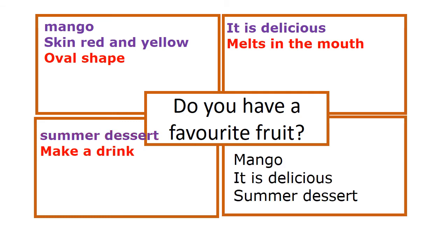As we said in the previous lessons, in our last square, we do not add any new information. We summarize what we have already written.